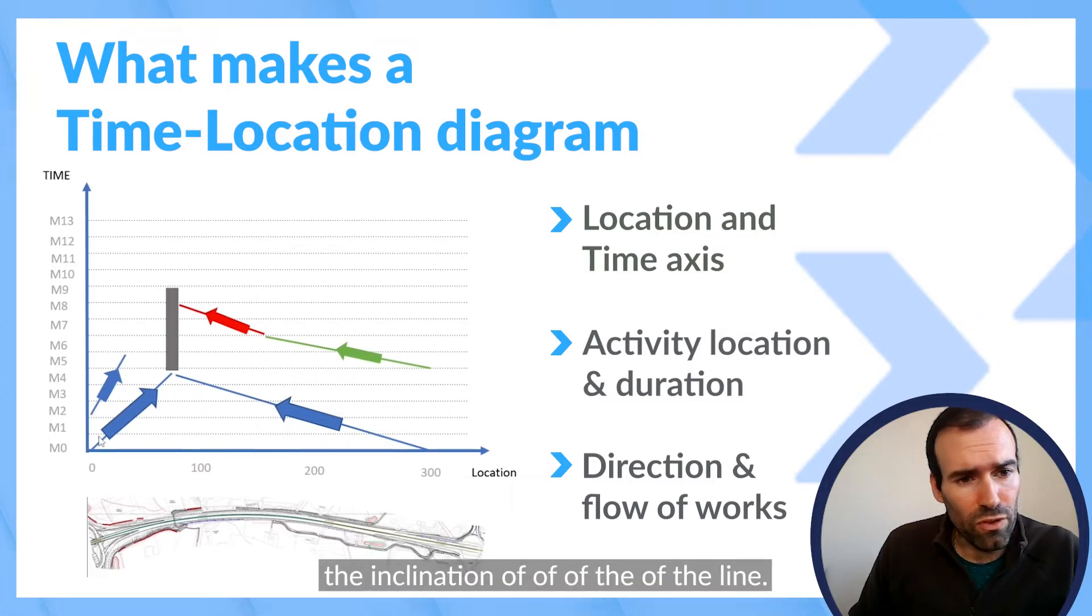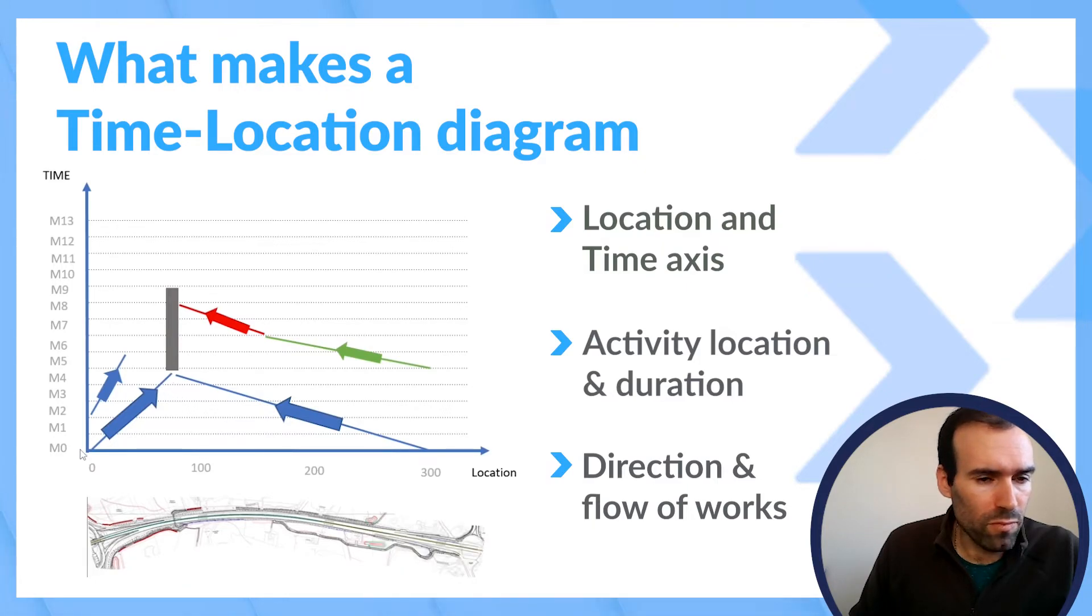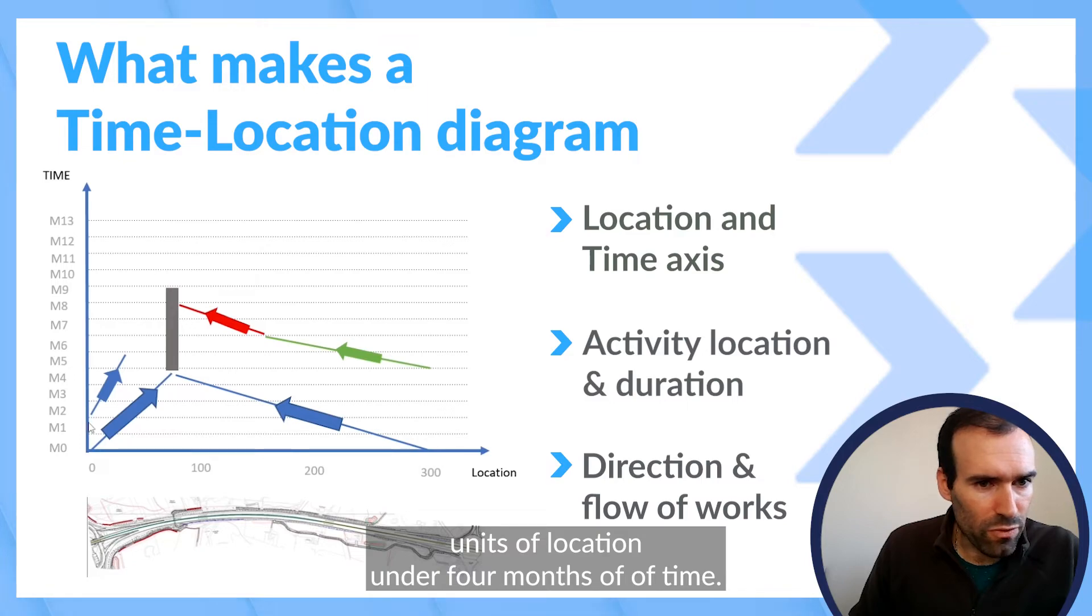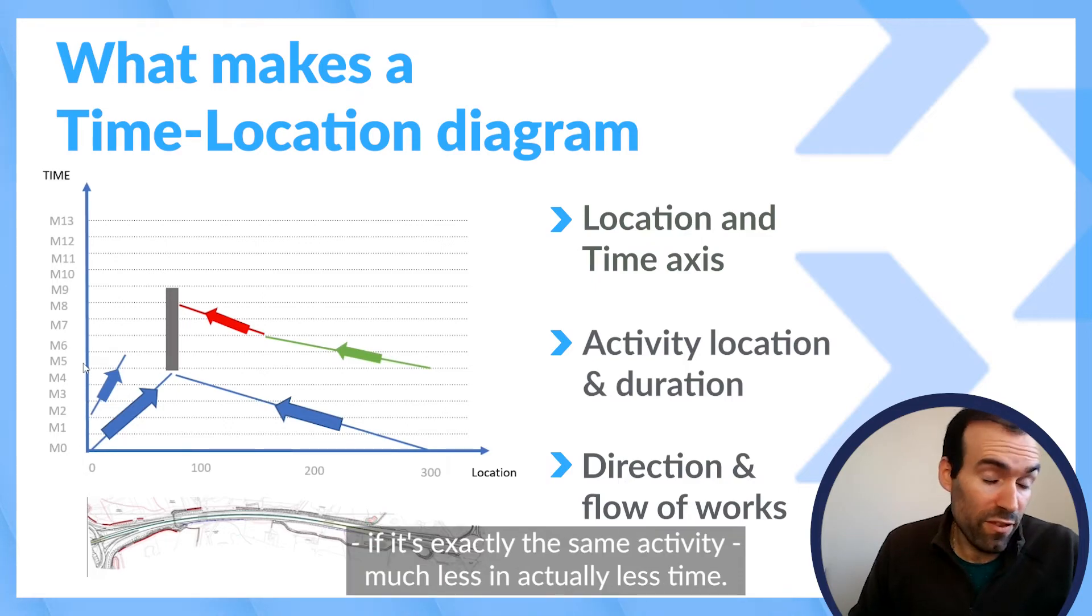the inclination of the line. So in this particular activity, we achieve probably 18 units of location under four months of time. In the other activity, we achieve much less. If it's exactly the same